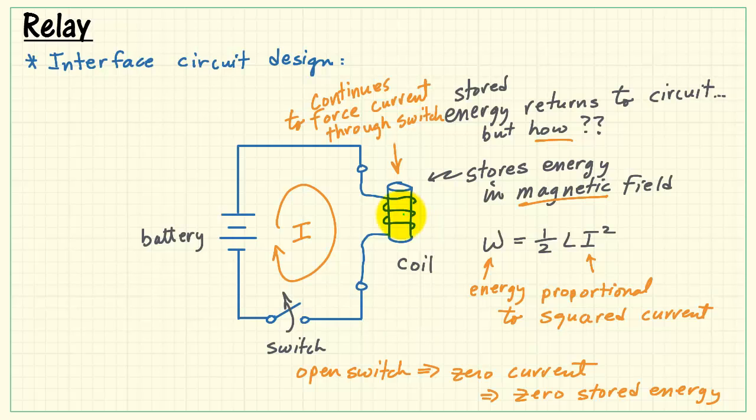Now if we do nothing special, this coil will continue to force current through the switch, and it will do so in such a way that it actually causes an arc to be established as the switch opens up. That means thousands of volts to cause arcing.